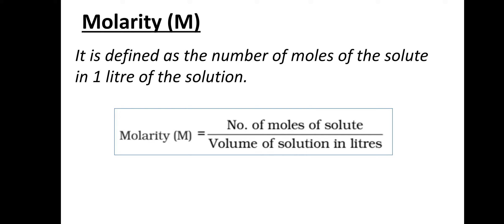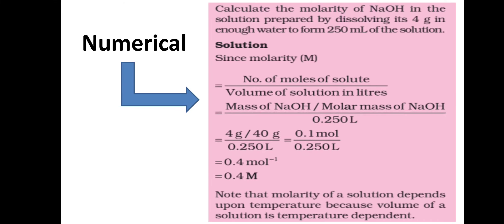We will now solve a numerical to better understand molarity. Calculate the molarity of sodium hydroxide in a solution prepared by dissolving 4 grams in water to form 250 mL of solution. The molar mass of sodium hydroxide is 40 grams per mole. The number of moles of solute = amount divided by molar mass = 4 / 40 = 0.1 mol of sodium hydroxide.